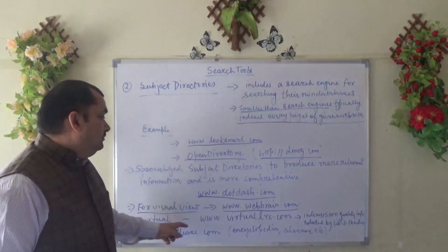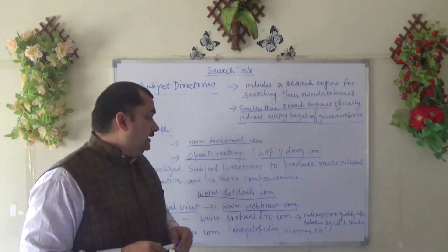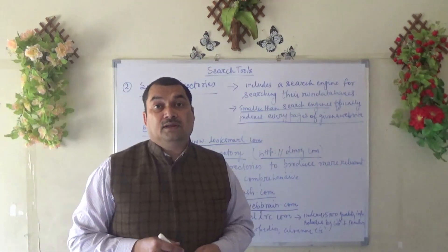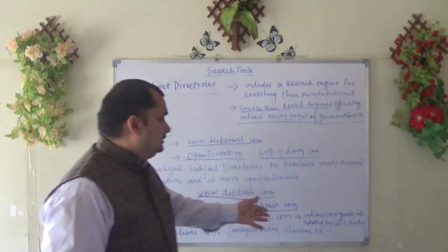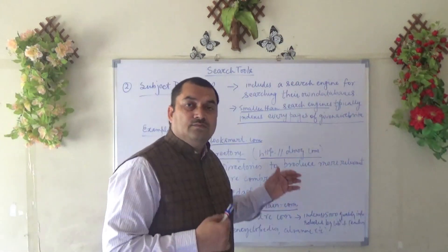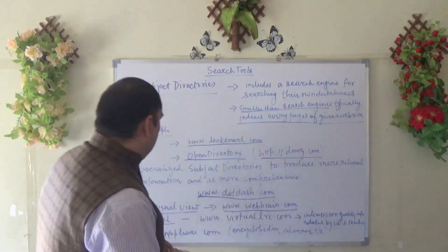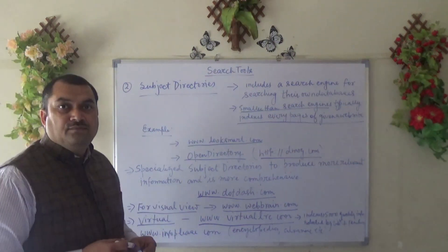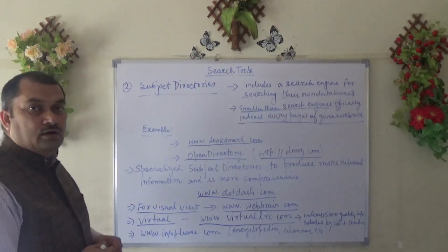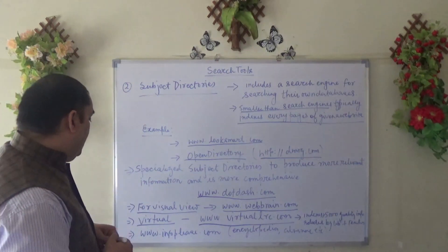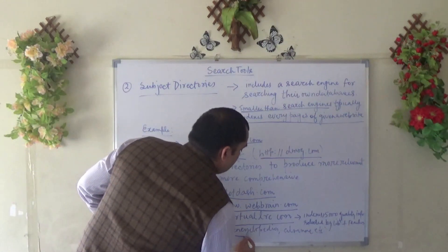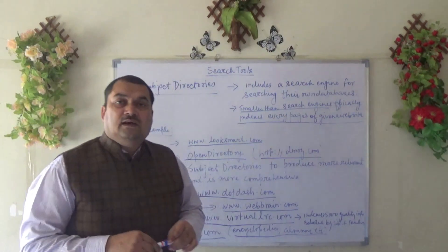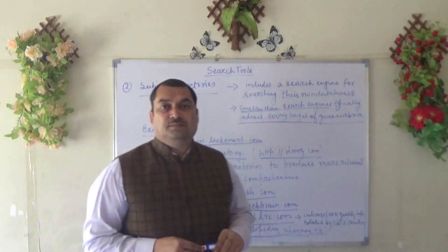VirtualLRC at virtuallrc.com indexes more than 5,000 quality information resources selected by librarians and teachers. It includes all online full-text databases and full-text journals, so if you browse virtuallrc.com you will get a lot of information related to your keyword or research idea. The last one is infoplease.com, which includes an encyclopedia and other reference content, and it also falls under the subject directory category.